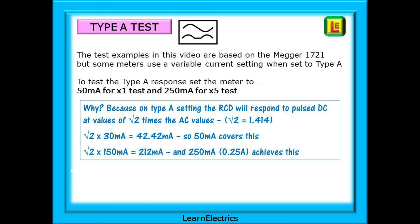The test examples in this video are based on the MEGA 1721, which will test all RCD types. But some meters use a variable user-adjustable current setting when set to type A. ROOT 2 times 30mA is 42mA and you will need to be set to 50mA for a times one test. For the times five test, ROOT 2 times 150mA is 212mA, and only by setting your test meter to 250mA or 0.25 amps will you achieve a result — the standard 150mA output is not enough. Follow the user instructions for your own particular meter. Many electricians have returned type A RCDs in the mistaken belief that the RCD is faulty — it's not faulty, it's looking for a test current of 250mA and the meter has been set wrong.